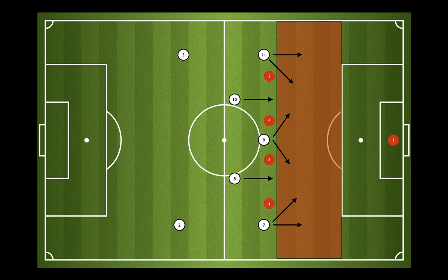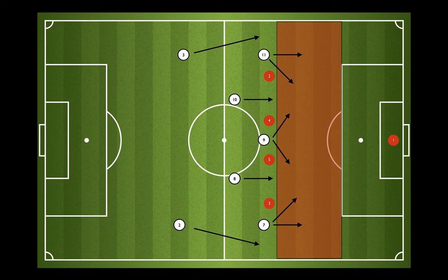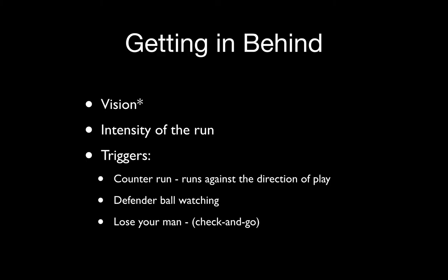2 and 3 also have a responsibility to get in behind, but this is dependent on the rotation and positioning of the 7 and 11. You must first recognize when they've vacated the space and then look to overlap and step into the space available to you. So if they're checking deep to receive the ball to feet, that's an opportunity to overlap wide. If 7 and 11 are looking to make a diagonal run across the field, you can step into the position they just left and be our wide option.